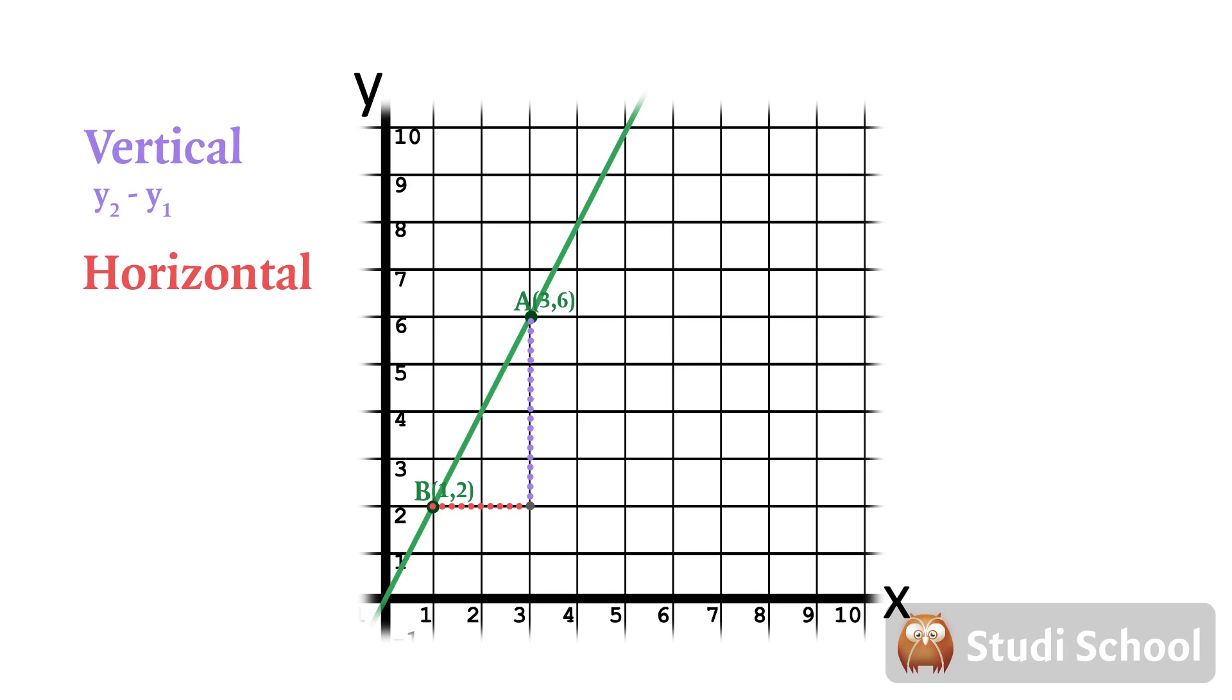And the length of the horizontal line is given by the difference in x values between the two points. It is the proportion of these two lengths that is the gradient.